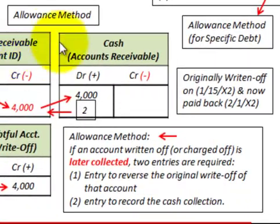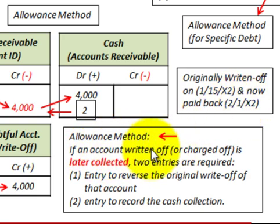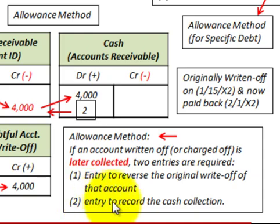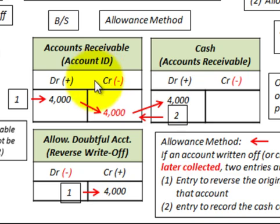Now let's look at how we'd recover this debt using the allowance method. The account was originally written off on 1/15/X2, and it was paid back on 2/1/X2. With the allowance method, if an account that was written off is later collected, two entries are required: number one, an entry to reverse the original write-off, and number two, an entry to record the cash collection.